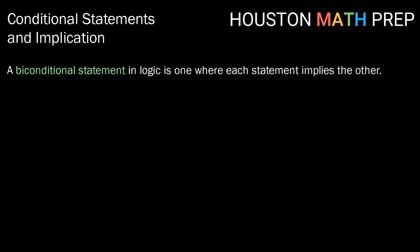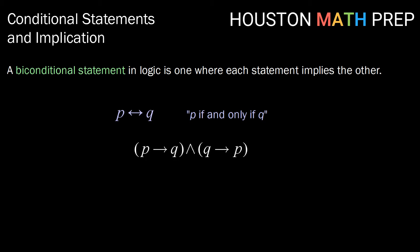A biconditional statement in logic is one where each statement implies the other. This we denote with a double-sided arrow, read as 'P if and only if Q.' The way we want to think about this is P implies Q and Q implies P.